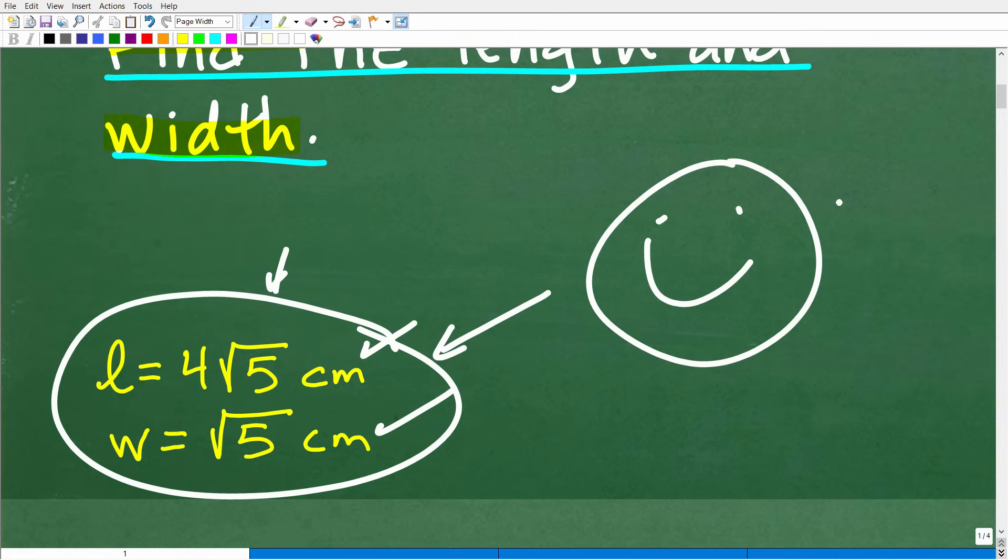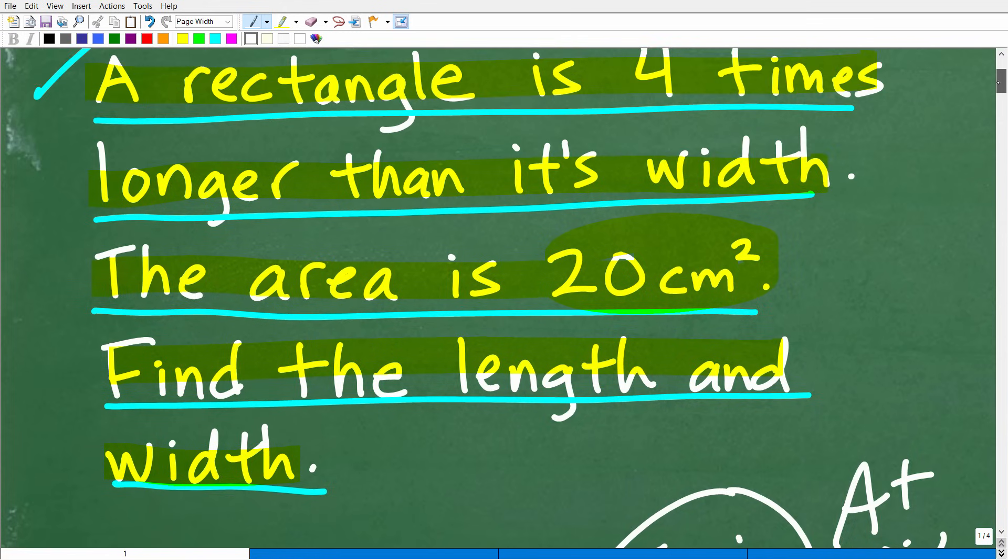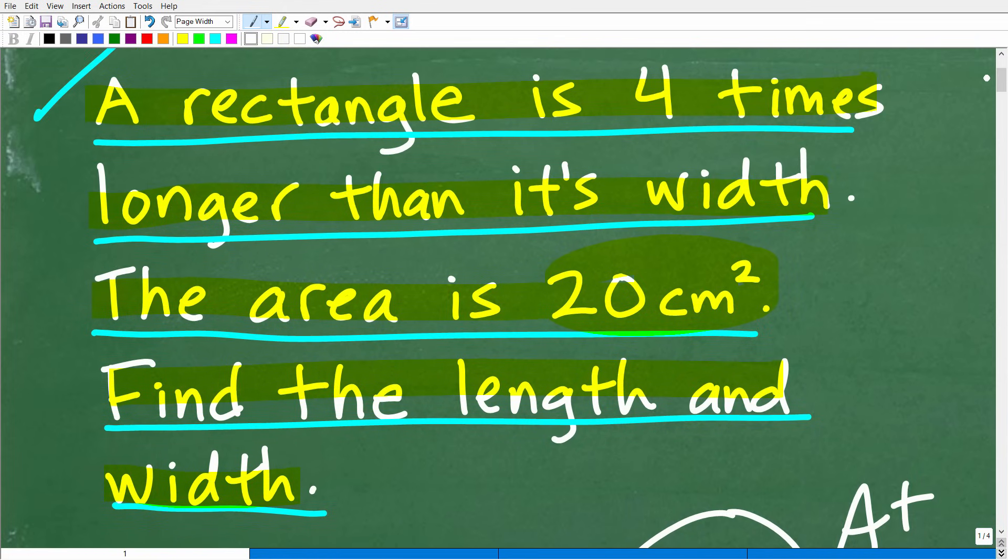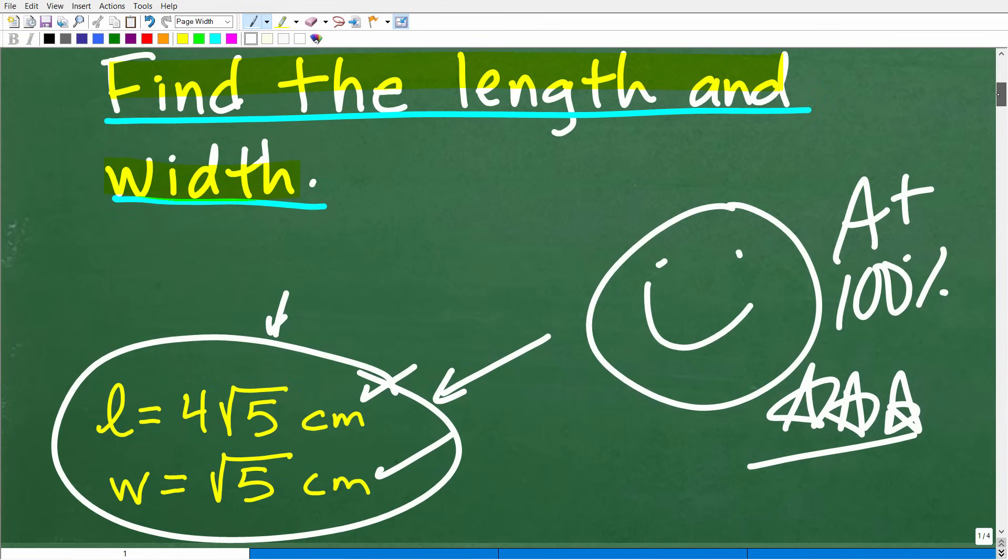And if you got this right, well, we have to celebrate by giving you a nice little happy face and A-plus, a 100%, and multiple stars. So you could tell your friends and family that, indeed, you are a certified professional expert in the area of solving basic quadratic equation word problems. But anyways, good job if you got this right.